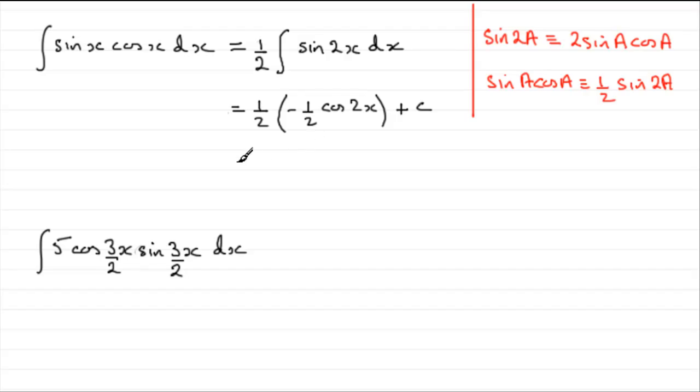Just clean this up. We've got half times minus a half. So, that's going to be minus a quarter. And then we've got minus a quarter cos 2x plus c.